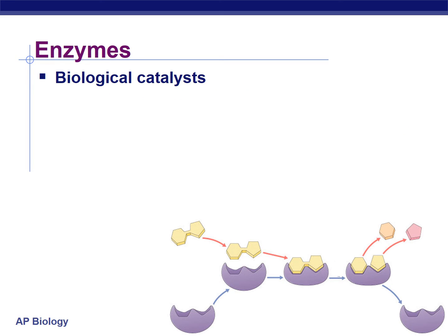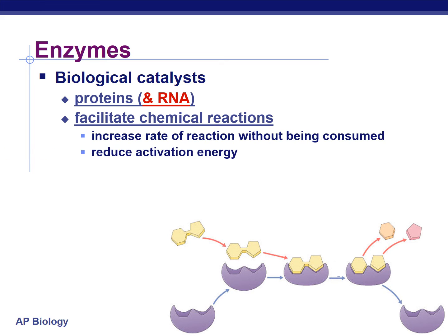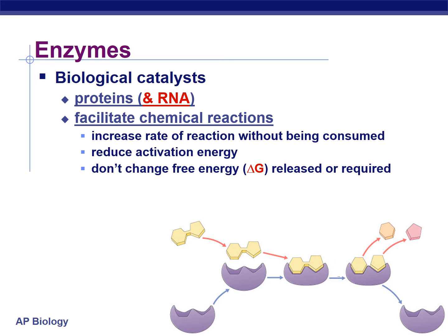Enzymes can be defined as biological catalysts. They're made out of proteins — some have RNA involved in them — and their job is to help chemical reactions take place. The cool thing about enzymes is that they get reactions to take place faster than they normally would by lowering the activation energy, but once they're done doing that, they're not used up — they can go and catalyze another reaction. They reduce the activation energy, but they don't change the amount of energy released or required once the reaction is over. They're really only involved in getting the reaction to start.